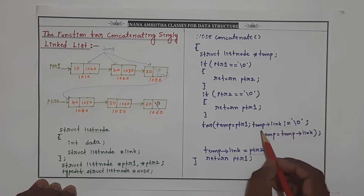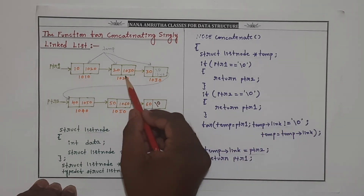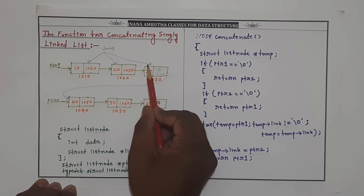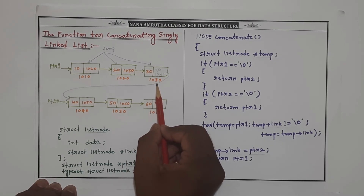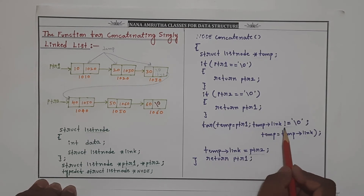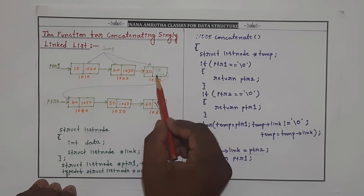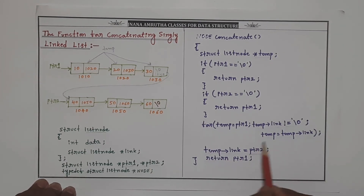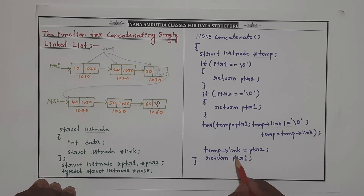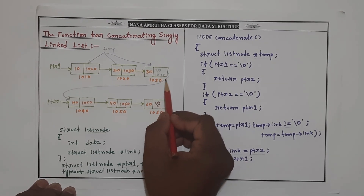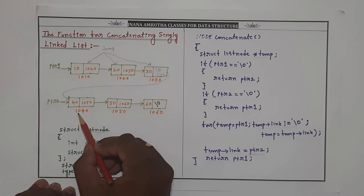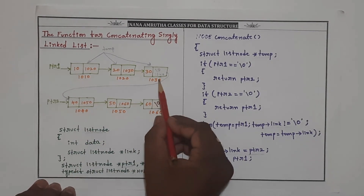Again we check temp of link is not equal to null — yes, condition is true. We move temp equal to temp of link. Now temp is pointing to node 1030. We check the condition again — temp of link is equal to null, so the condition becomes false. Once the condition is false, we exit the for loop and execute: temp of link equal to PTR2. Temp of link will now contain the address of PTR2, that is 1040.